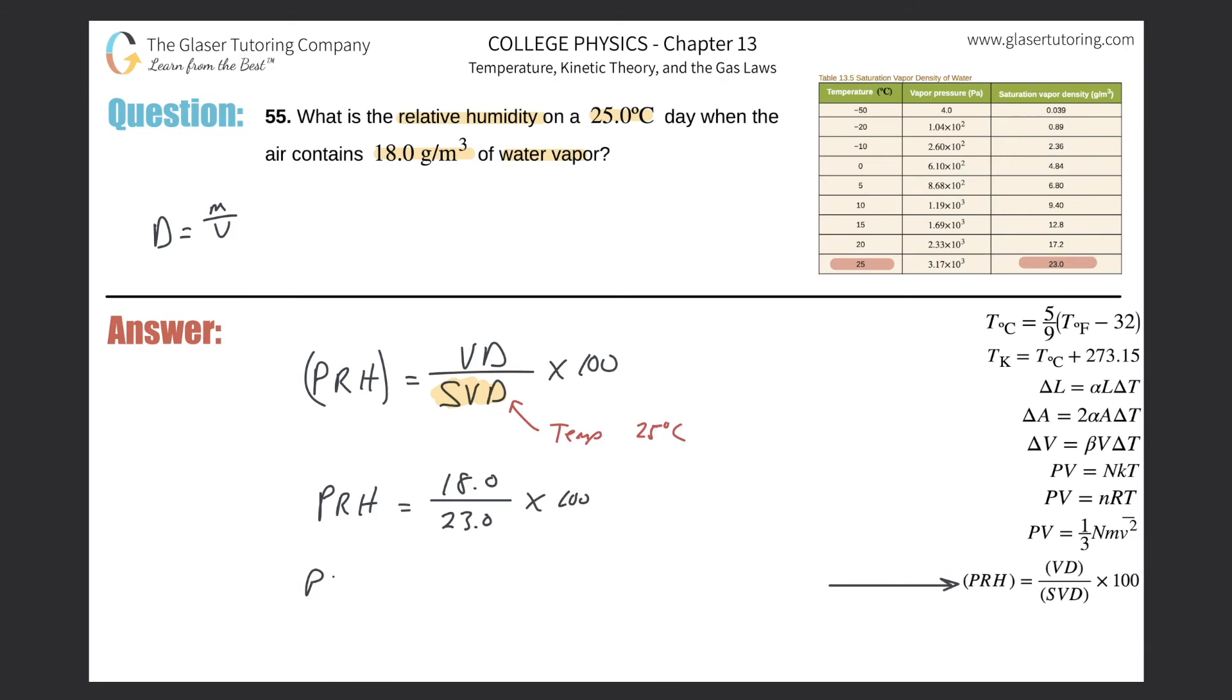So the percent relative humidity will be equal to, let's take out that handy-dandy calculator, and it's 18 over 23. And what do we get? Multiplied by 100, obviously, is 78.3. And I guess three sig figs should be fine. So this is the percent relative humidity. That's it.